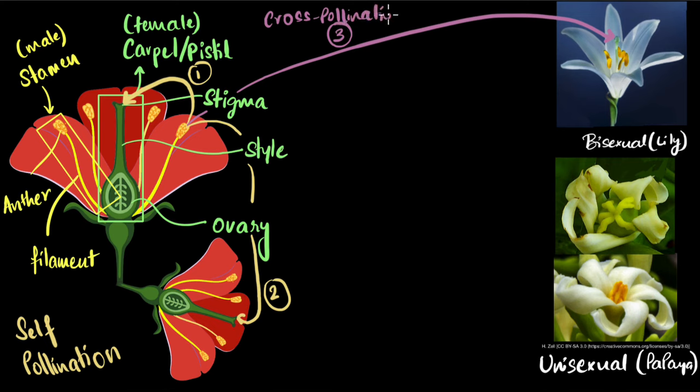Now of course cross does not mean a cross species. No, no, no. Same species obviously. A lily flower has to pollinate with another lily flower only. The cross means it's across two different plants or two different trees.